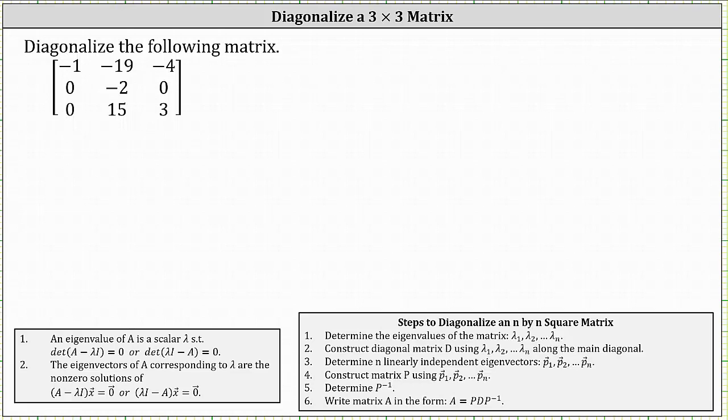We are asked to diagonalize the following three by three matrix. The steps to diagonalize an n by n square matrix are as follows. Number one, we determine the eigenvalues of the matrix, which in our case will be lambda sub one through lambda sub three.